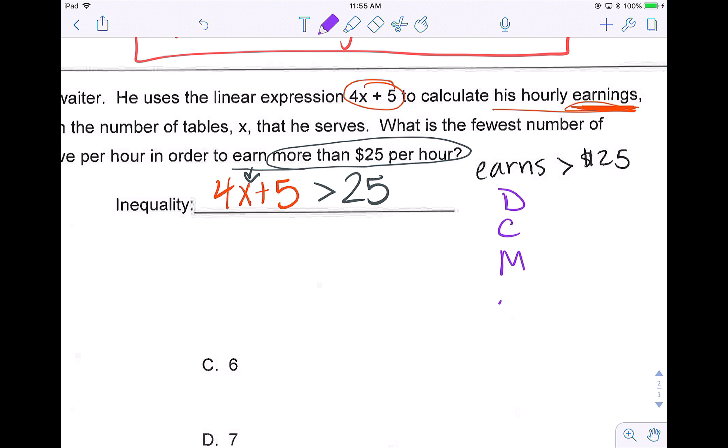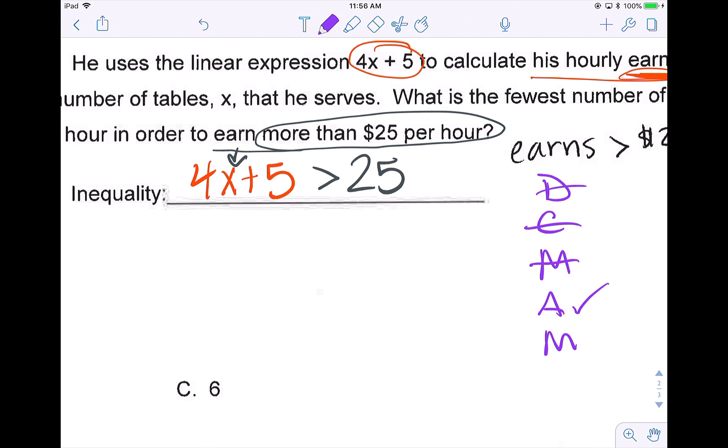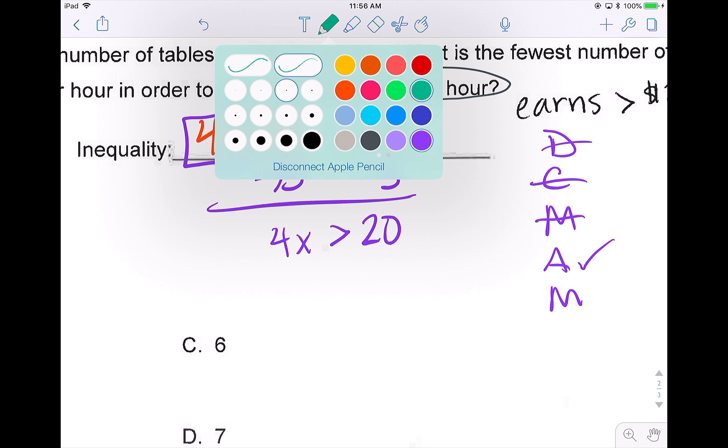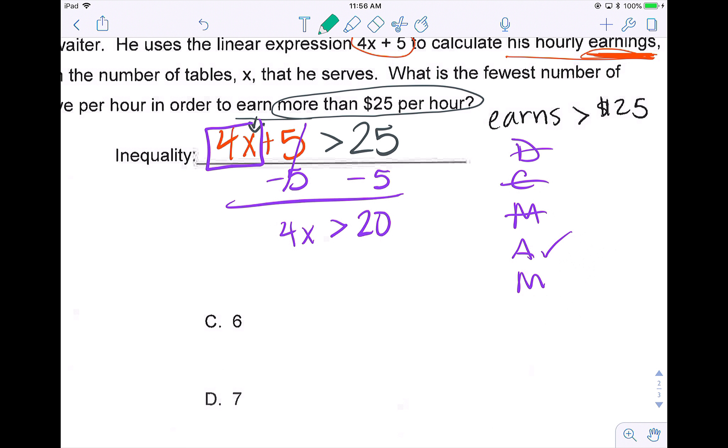So to solve, we're going to use our don't call me after midnight. We don't have parentheses to distribute. We don't have like terms to combine. We don't have variables on both sides. So this is a two-step problem. To solve for X, I'm first going to subtract 5 from both sides. So 4X is greater than 20. And then I'm going to divide both sides by 4. And X is greater than 5.